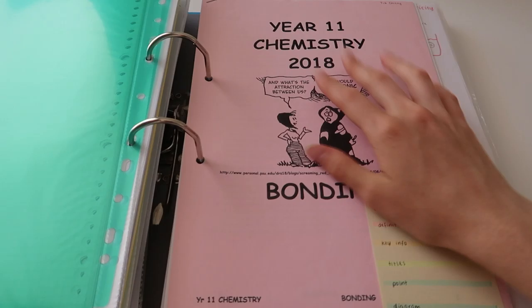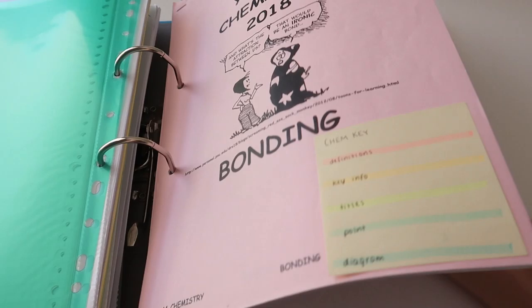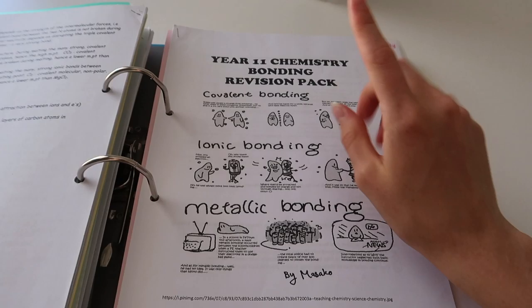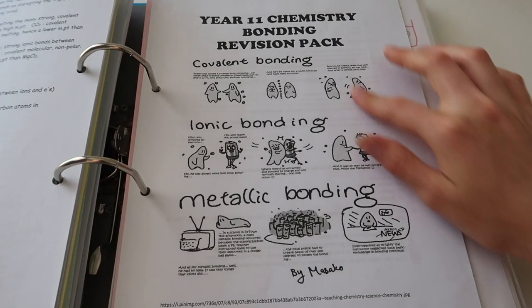So this was the next topic that we did, bonding. Here's the booklet for bonding. And then after that, here's the revision pack that we did. So that's like the revision for the test. I'm not sure where the other one was, but this is revision for the test.